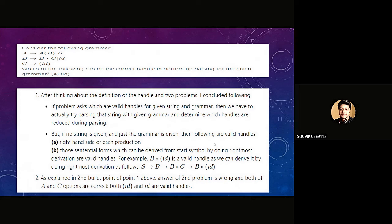A production or its right-hand side could be a handle for a grammar if there exists a derivation which involves that production. That's not necessarily the case for every production in a grammar since a grammar can include unreachable and useless productions. There exist derivations which use each production. B → id is a valid handle as we can derive it by doing rightmost derivation as follows: S ⇒ B ⇒ C ⇒ B, and so on. On that basis, I agree that both options are correct.